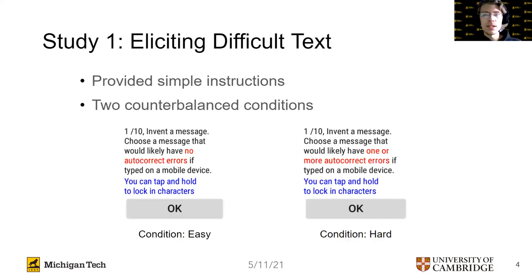In our first study, we provided simple instructions in two counterbalanced conditions. In the easy condition, we asked participants to invent a message — choose a message that would likely have no autocorrect errors if typed on a mobile device. In the hard condition, we asked participants to choose a message that would likely have one or more autocorrect errors if typed on a mobile device. Both instructions also informed participants that they could tap and hold to lock in characters, which was one of the error prevention features of our interface. Doing this would prevent the probabilistic decoder from changing or deleting that particular letter in the autocorrect process.